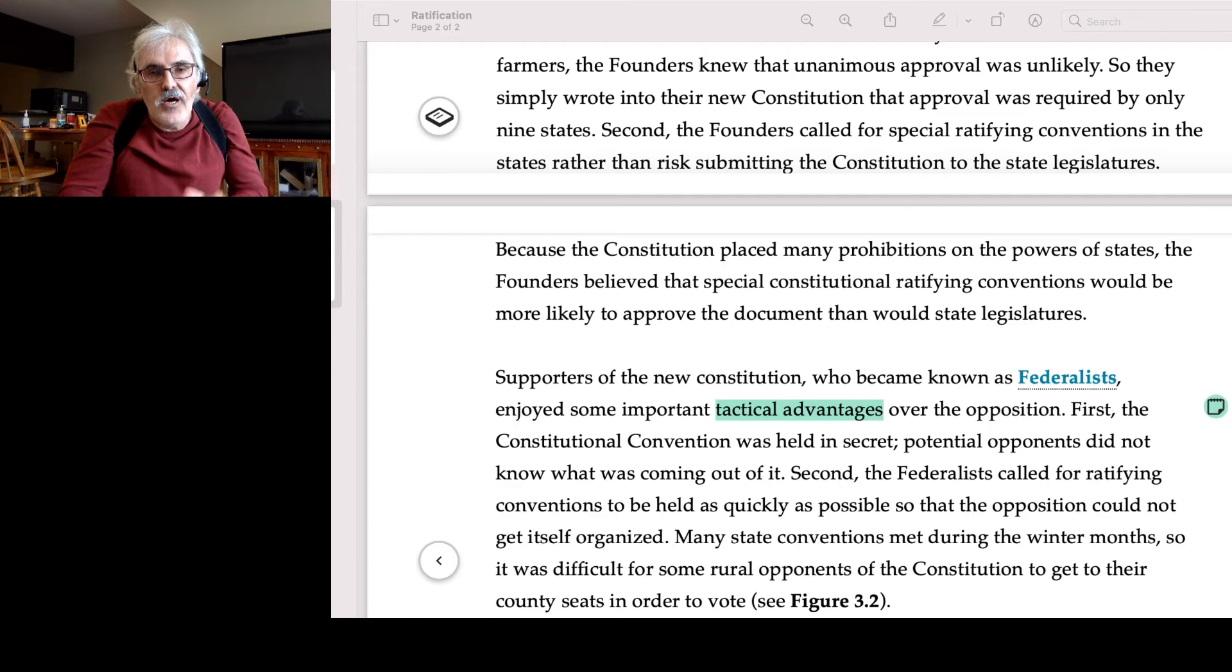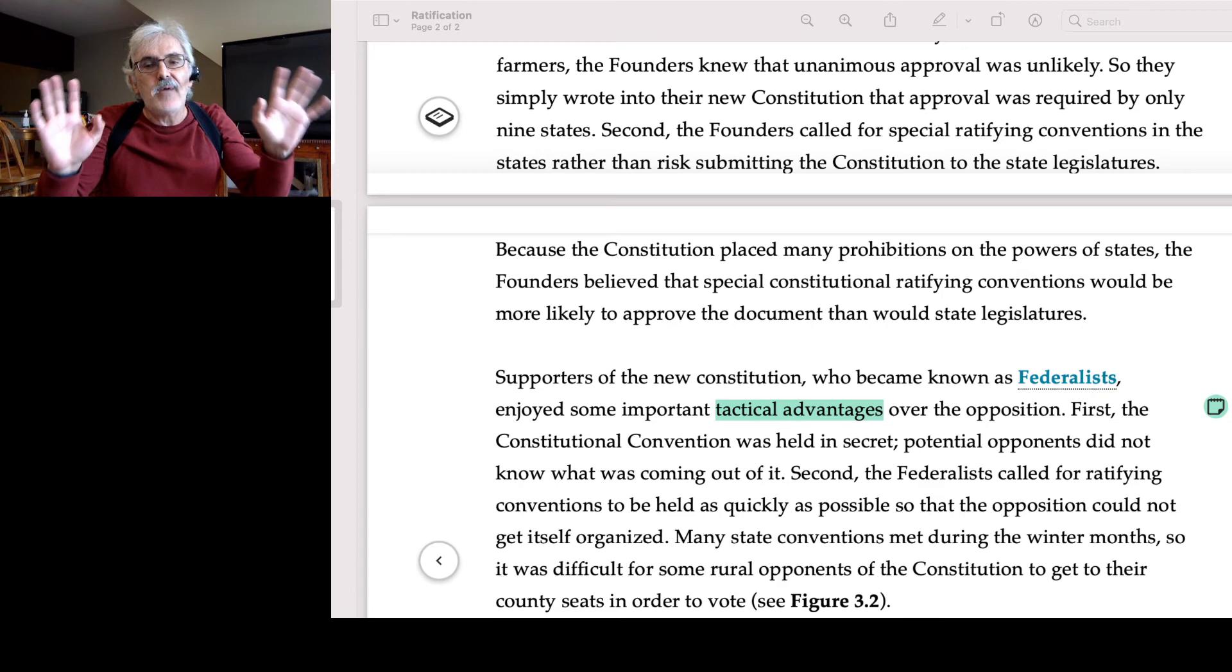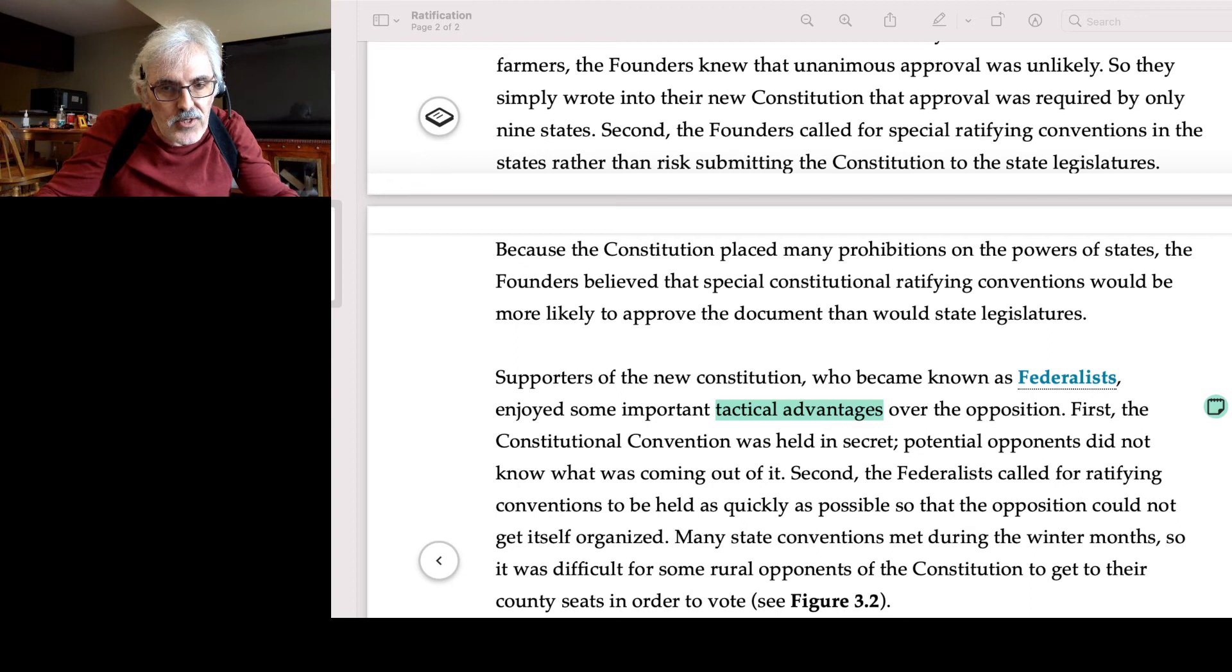So second point that this was a coup d'etat: The Articles of Confederation required ratification of constitutional change not only be unanimous, but be carried in state legislatures. Knowing that they would lose, the Founding Fathers simply said, 'Hey, we're going to create special ratifying conventions that are friendly to our cause because we want it to win.'